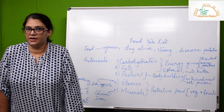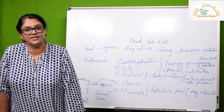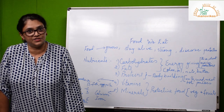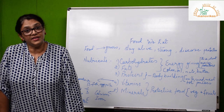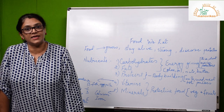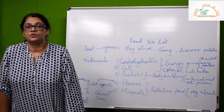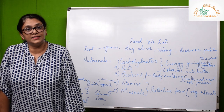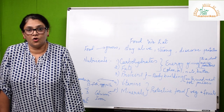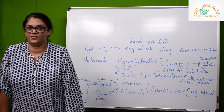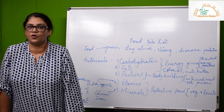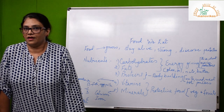Roughage is the fiber present in our food that cannot be digested by our body. This fiber is important in order to remove solid waste from our body. Vegetables and fruits contain this fiber, so it is very important for us to consume a lot of fruits and vegetables.